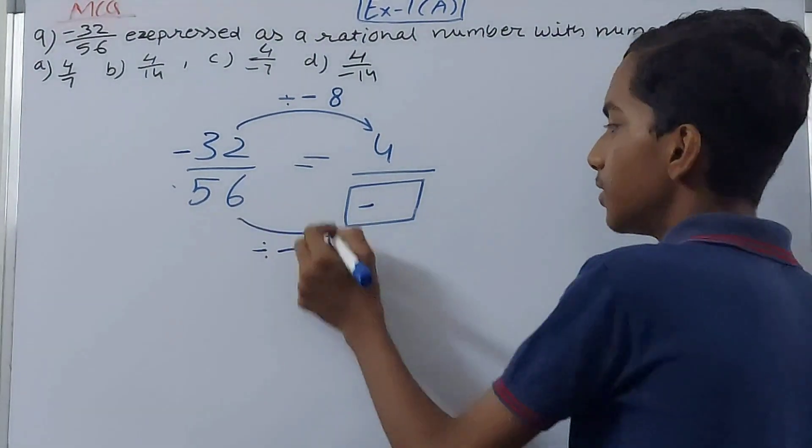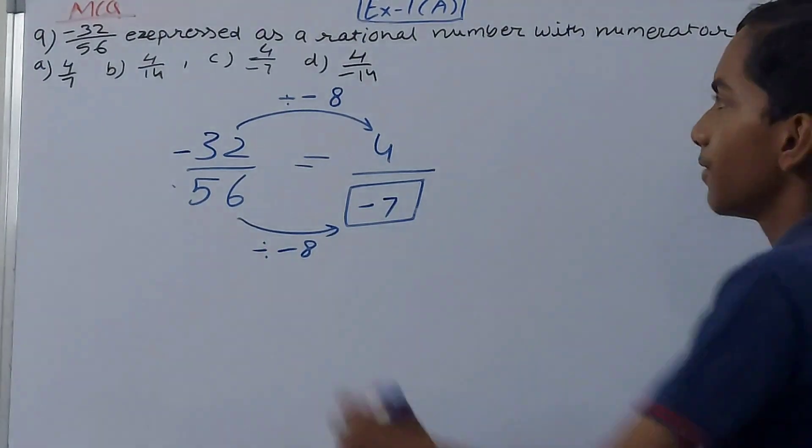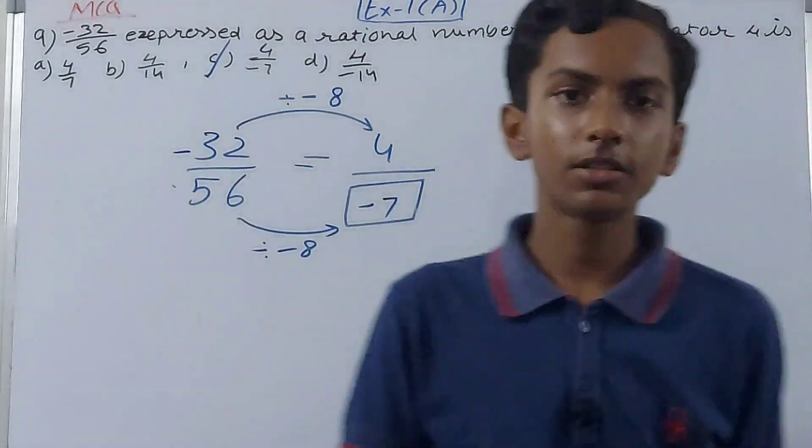So 4 by minus 7. Option C is correct. Friends, this is all for today.